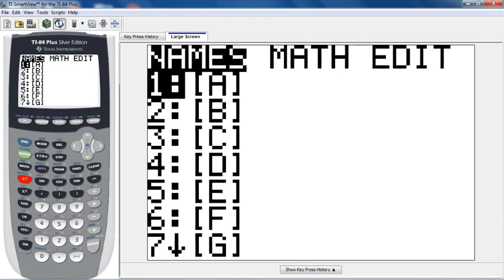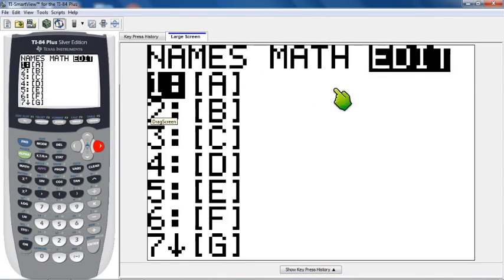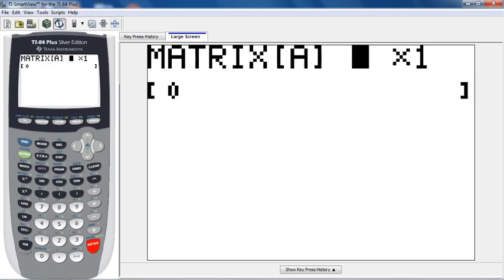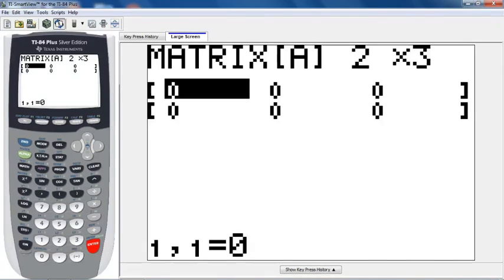And then once you go over to edit, hit enter. We're going to edit matrix A. So right now, it's a one by one matrix, which means it's just one cell. And so this goes rows by columns. And if you look at the two-way table, it's two rows by three columns. So it's a two by three matrix. The organization of this matrix, the structure, should match whatever two-way table you're using.